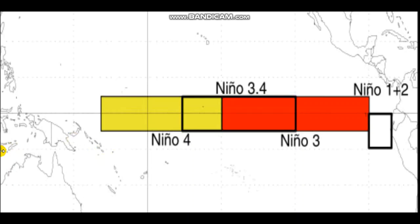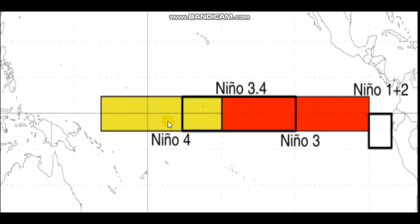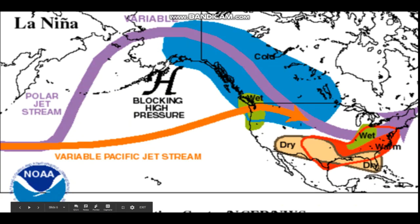If you search for the ENSO outlook — and I apologize, I sometimes accidentally say 'ENCO' instead of 'ENSO' — it shows you the weekly anomalies, meaning the departures from average across each individual Niño region. This gives you an idea of whether a Modoki, El Niño, La Niña, or neutral pattern is forming at that specific time.